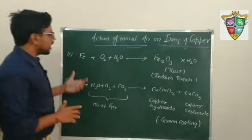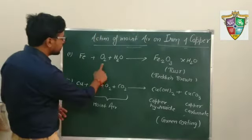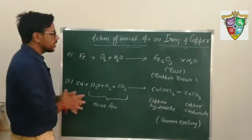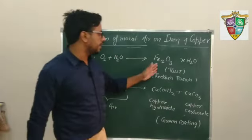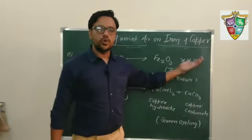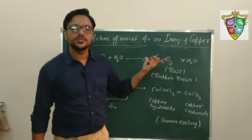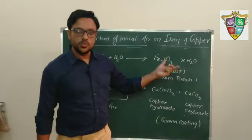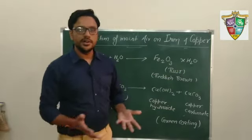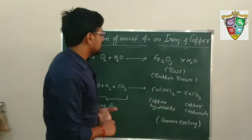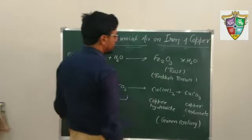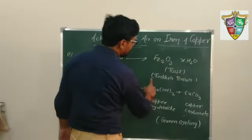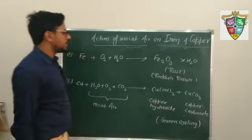Iron is exposed to air. This is damp air, oxygen plus water. It forms iron oxide. And some content of water means this is the formula for rust. Iron forms iron oxide when it is left uncovered in air. This is known as corrosion of iron. And this rust is reddish brown in color.